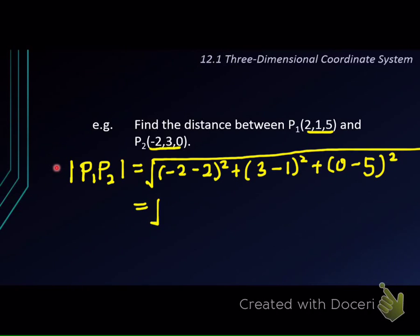Okay, so this one, the first term will give us negative 4 squared, that gives us 16, plus 3 minus 1 squared, you get 2 squared, that is 4, plus negative 5 squared, you get positive 25.